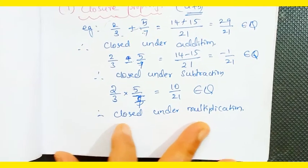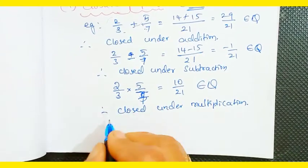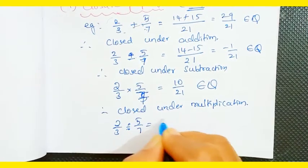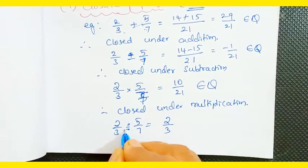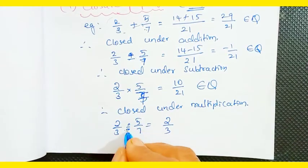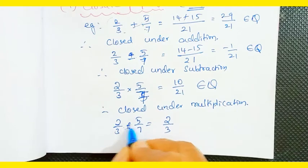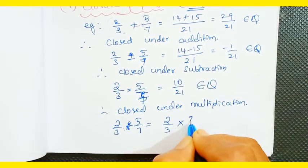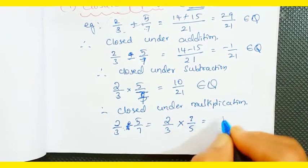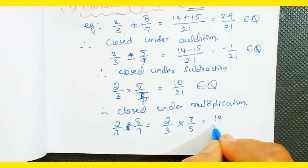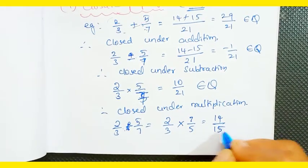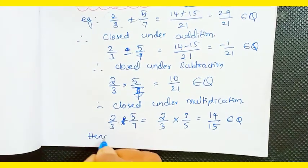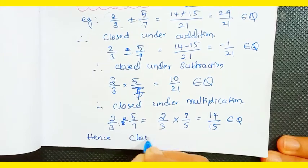For division: suppose 2/3 divided by 5/7. We take the reciprocal, so 2/3 × 7/5. We get 2 × 7 = 14 and 5 × 3 = 15, giving 14/15, which also belongs to rational numbers. Hence, the closure property is satisfied for rational numbers under division.